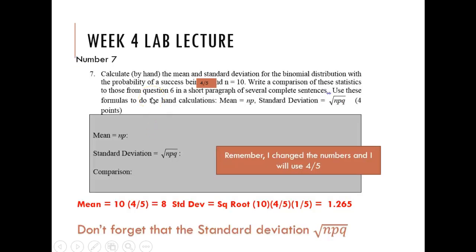Finally, number seven. I did not do the same probability for mine. I did this for four-fifths. I get a mean of ten times four-fifths, which is forty divided by five, which is eight.